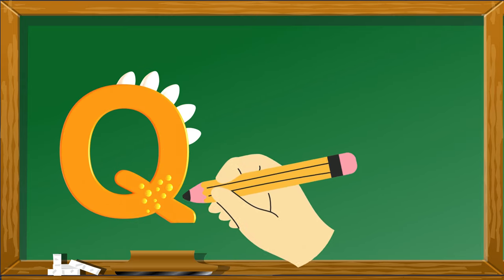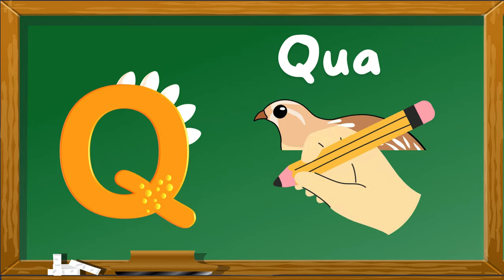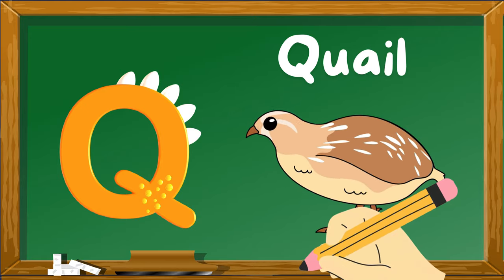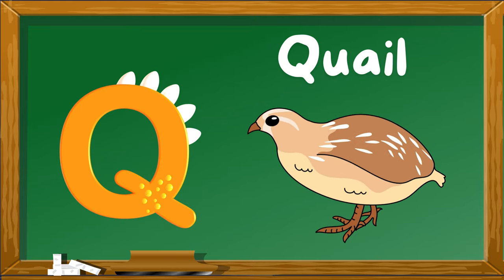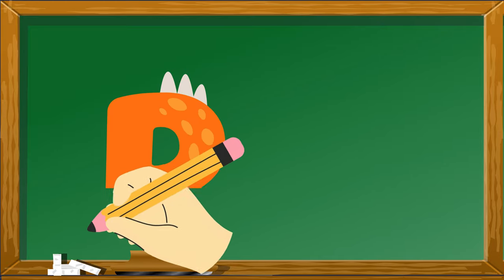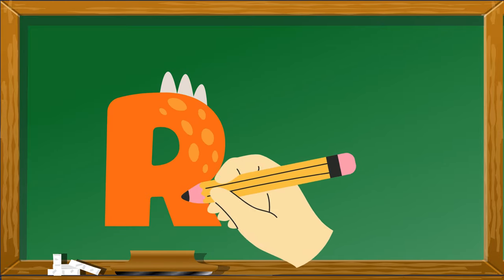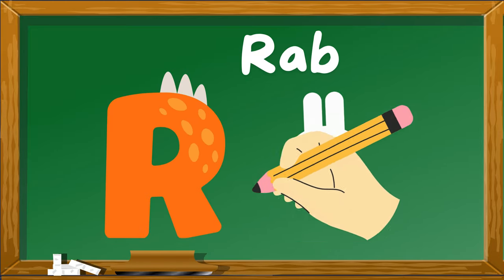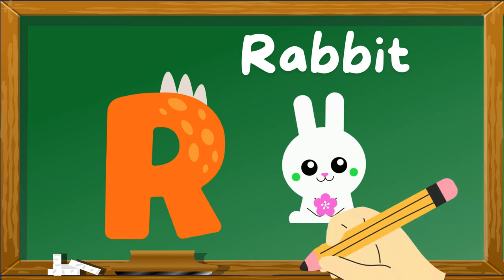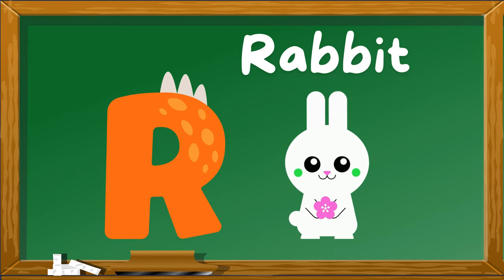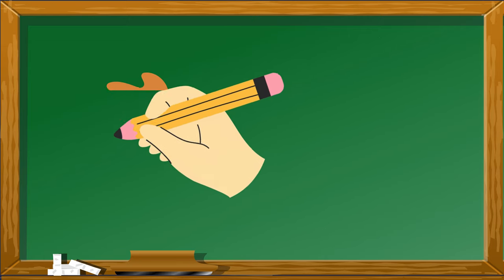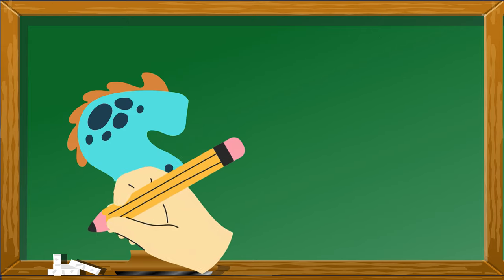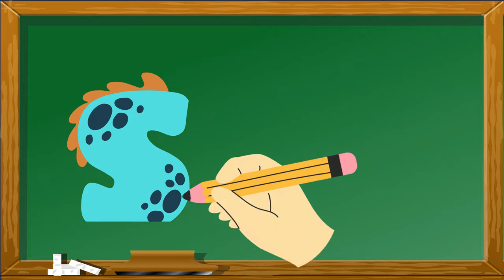Q is for Quail. R is for Rabbit. S is for Snake.